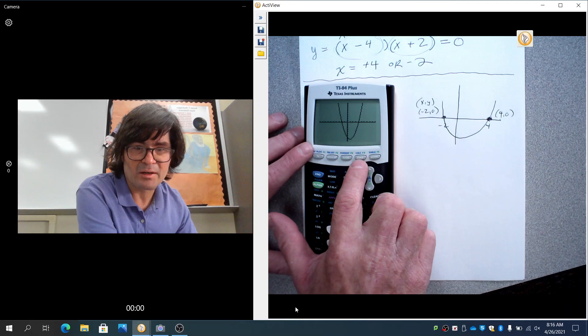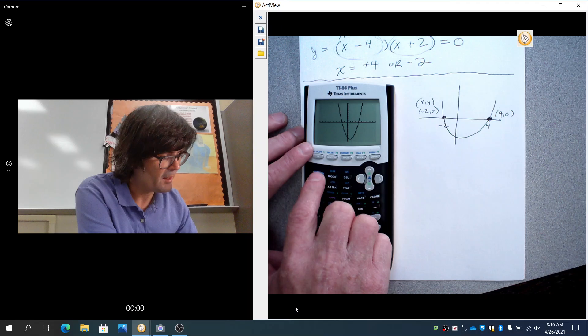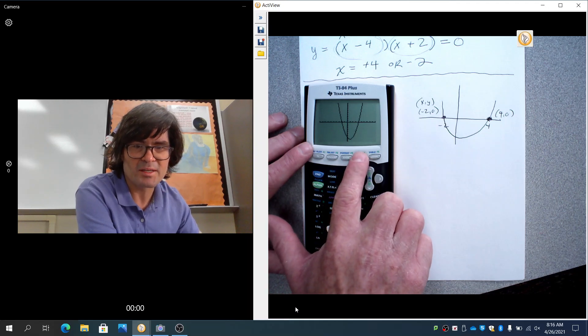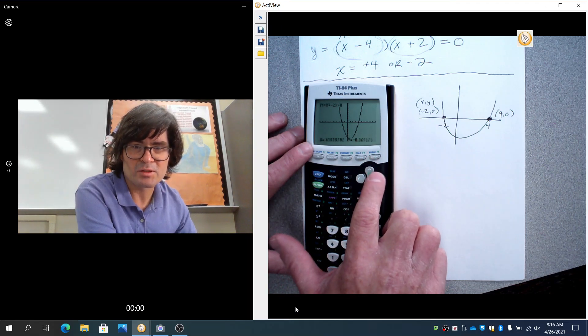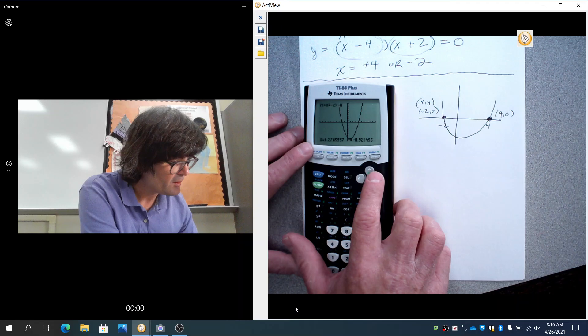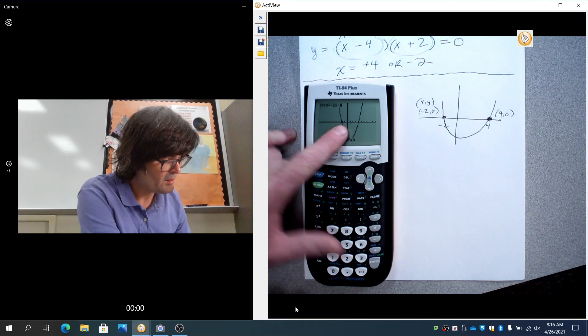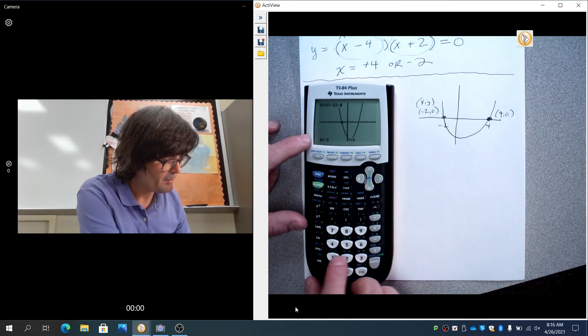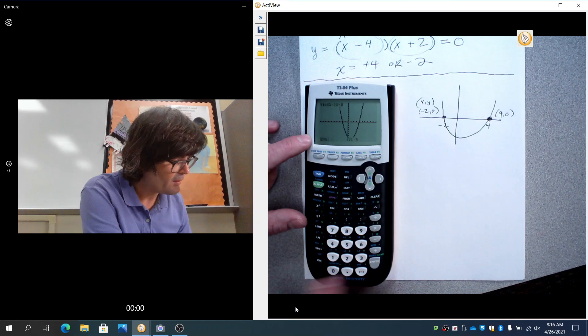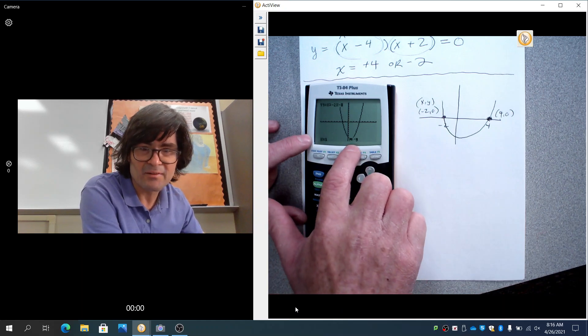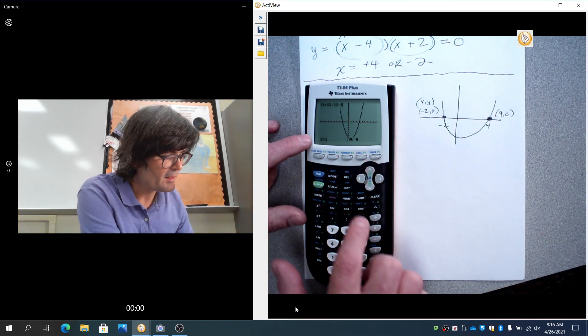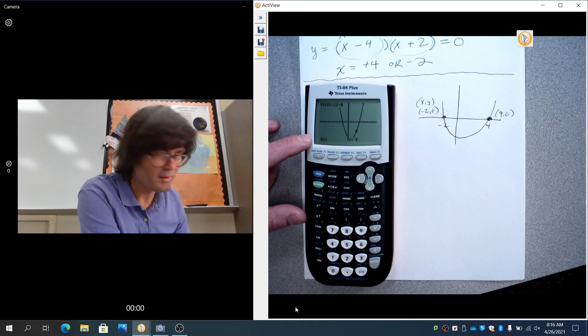But if you wanted to verify that yourself, you go to the calc menu right there. You push second trace. One option is you can push the trace key and you have this little cursor that moves around and you could type like x equals negative 2 and then it tells you what the y value is. Sure enough, it's 0. You could type like x is 1 and y is negative 9 way down there and you could type x is 3 and so forth.